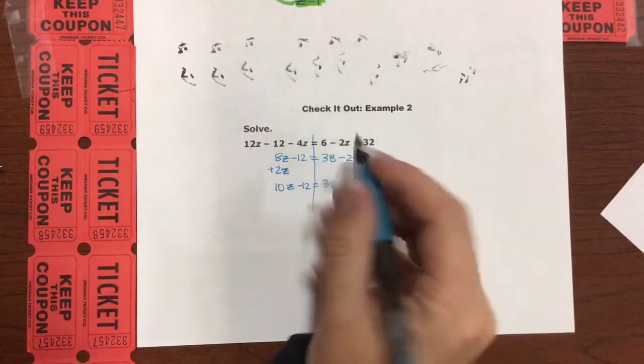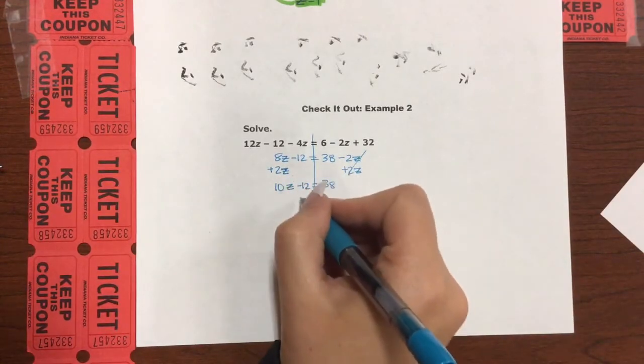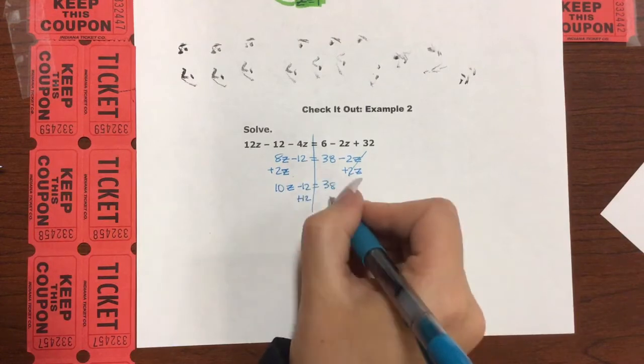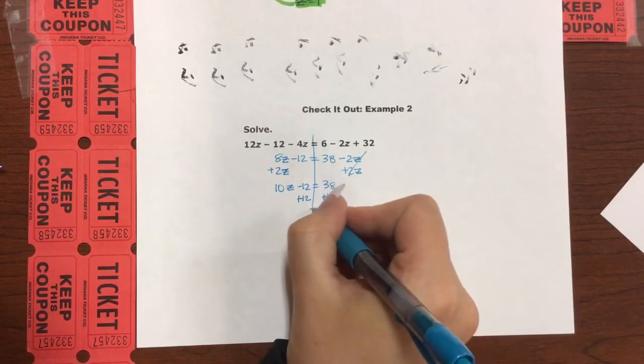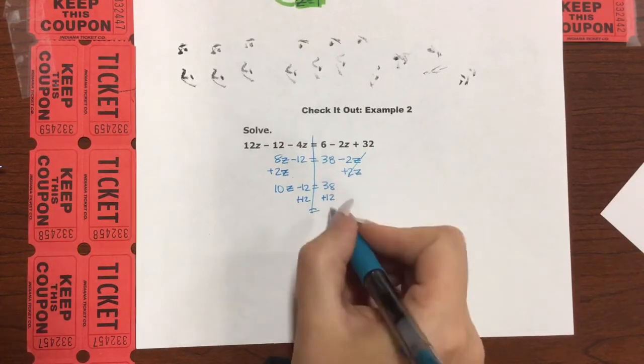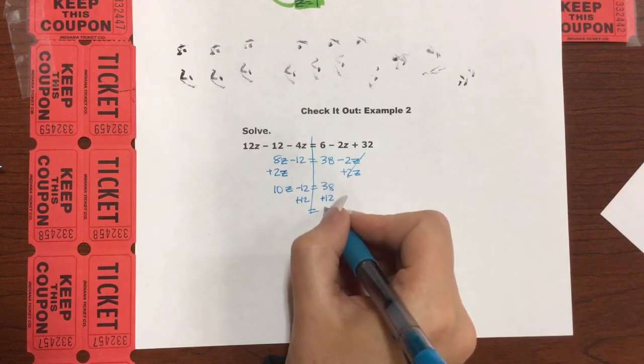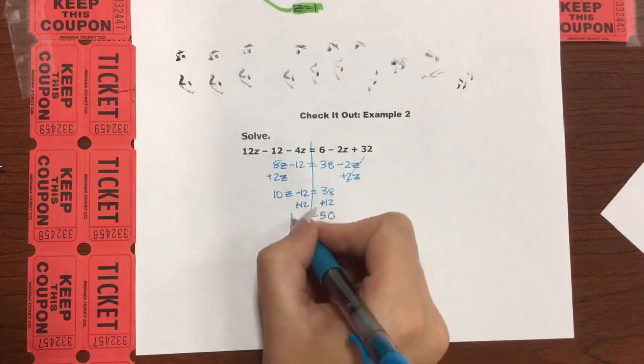Okay, we are going to get z by itself and isolate it. To do that, we've got to get rid of this 12. An inverse operation of a negative 12 is a positive 12. And then we're going to add that, which is going to be 0, 50, and 10z.